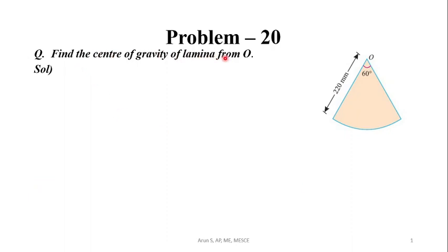Find the center of gravity of the lamina from O. This is the lamina. It is 225mm and includes 160 degrees. We have to find out the center of gravity about the point O. We will choose our axis - we will select X and Y axis. This figure is symmetrical about Y axis, so the center of gravity will be lying along the Y axis.